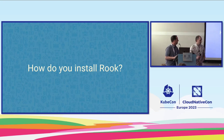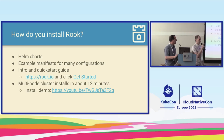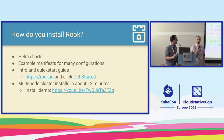How do you install Rook? The Rook operator and Ceph cluster both have Helm charts. For more common and complex configurations, we have example manifests. Going to rook.io and clicking Get Started is the easiest way to get started. Last year, Travis and I gave a demonstration of installing Rook on a multi-node AWS cluster, which took about 12 minutes. The link is in the PDF slides.